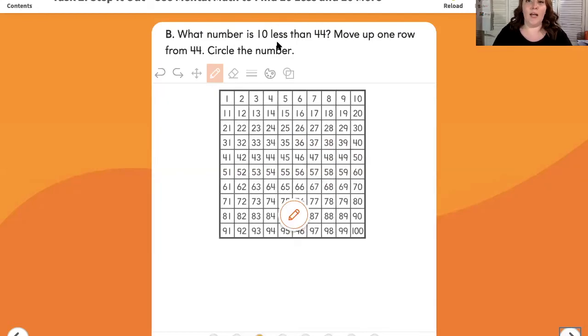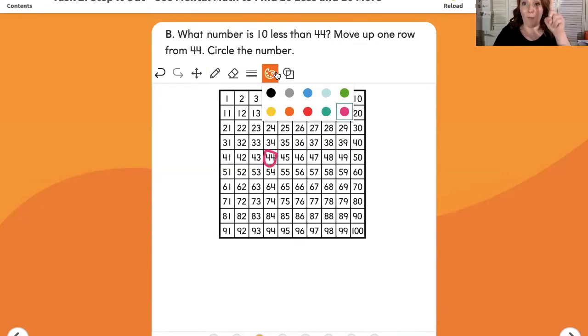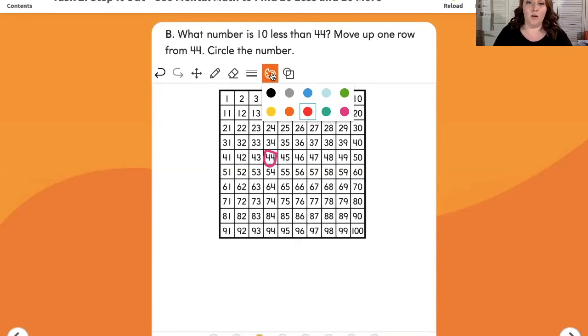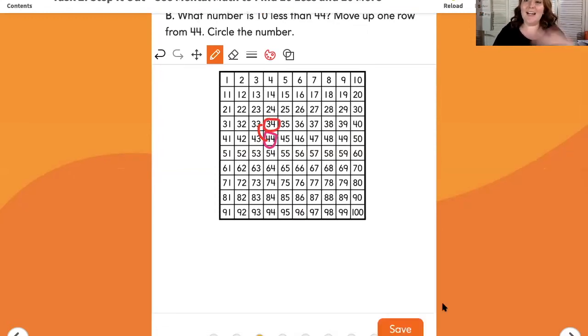What number is 10 less than 44? Move up one row from 44 and circle the number. So again, let's circle 44 and it's telling me to move one row up. So I'm going to move one row up and that gives me 34. So 34 is 10 less than 44. I'm taking away one group of 10.